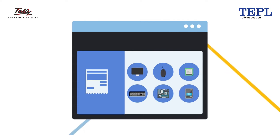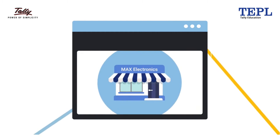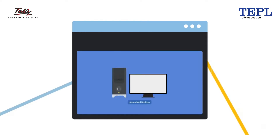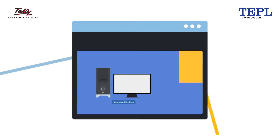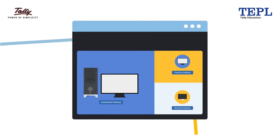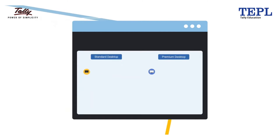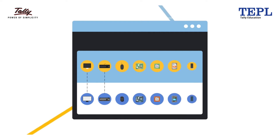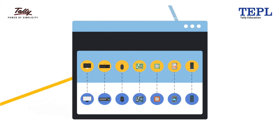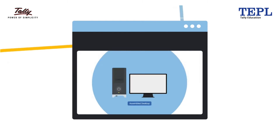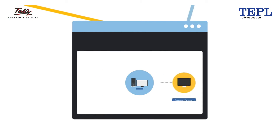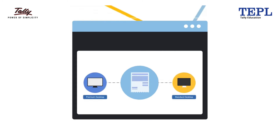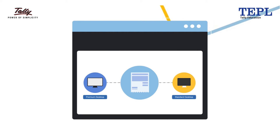To make it a little easier, let's consider an example. Max Electronics assembles a computer desktop named Assembled Desktop. They have two variants: one being Standard Desktop and the other known as Premium Desktop. Here is a list of components to assemble the two variants. Both variants come with different components or configurations. Assembled Desktop is the finished product; Standard Desktop and Premium Desktop are the Bill of Materials or BOM.